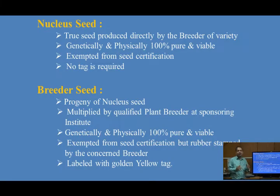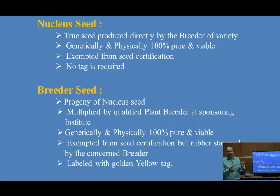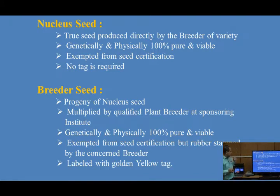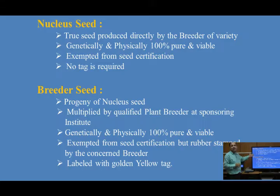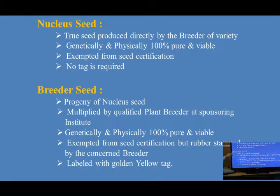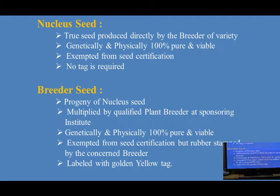Nucleus seed is exempted from seed certification. There is no need of seed certification and no labeling is required. When we talk about the next stage — breeder seed — this is the seed production chain: nucleus seeds, breeder seeds, then foundation seeds and certified seeds. Breeder seed is the progeny of nucleus seeds. When we grow nucleus seeds of a particular variety, we harvest breeder seeds. It is multiplied by the qualified plant breeder at a sponsoring institute.